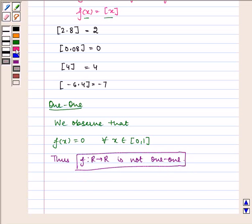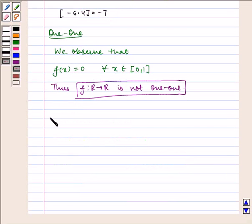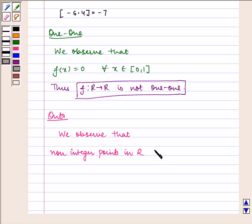Now let us check for onto. We observe that non-integer points in R do not have their pre-images.